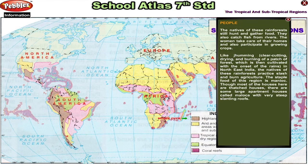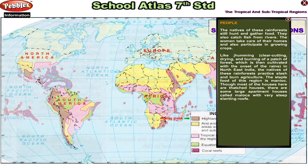The natives of these rainforests still hunt and gather food. They also catch fish from rivers. The women take care of their homes and also participate in growing crops. Like humans, clear cutting, drying and burning of a patch of forest, which is then cultivated with the onset of the rains — in North East India, the natives practice slash and burn agriculture. The staple food of this region is Manioc. Though most of the houses here are thatched houses, there are some large apartment houses called Maloka, with very steep, slanting roofs.